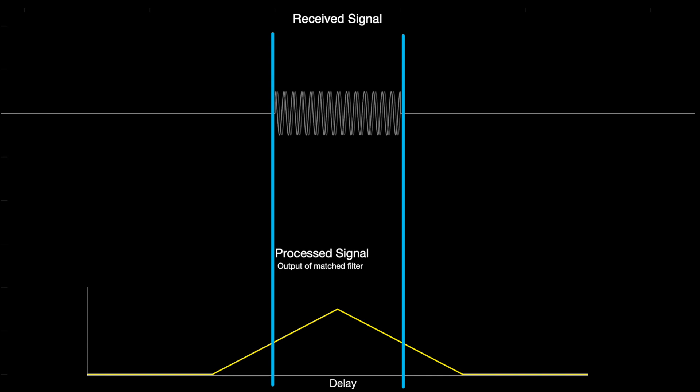That is, it impacts how close two separate objects could be from each other and still register as two objects. For example, let's say that a radar sends out a pulse, and that pulse reflects off of two objects at different ranges. Therefore, what the radar receives is two echoes of the same pulse. And the time between these two pulses affect whether the matched filter sees both of them or just one large object.